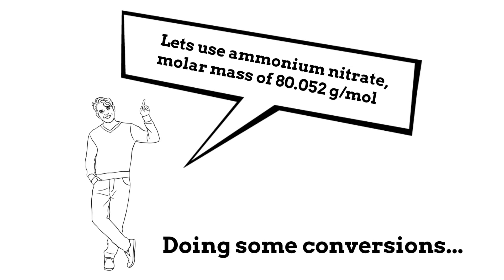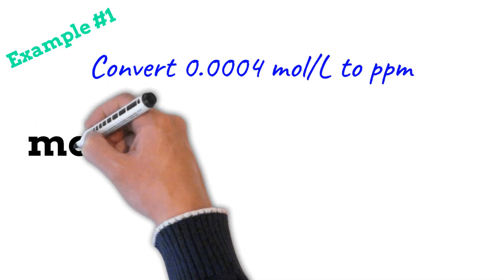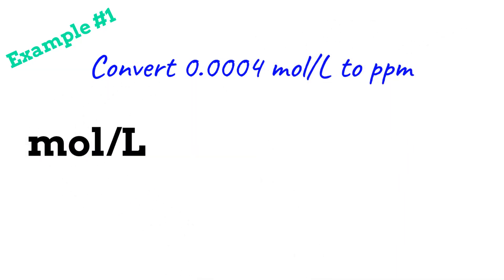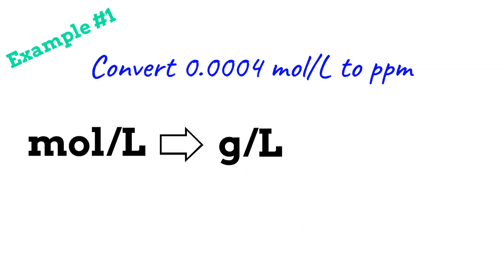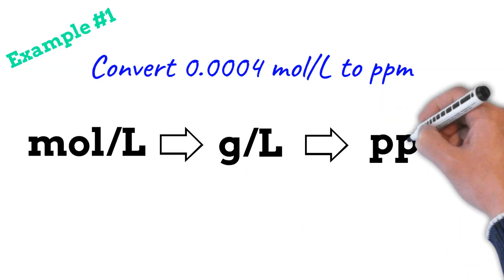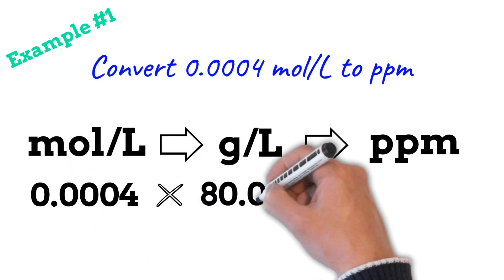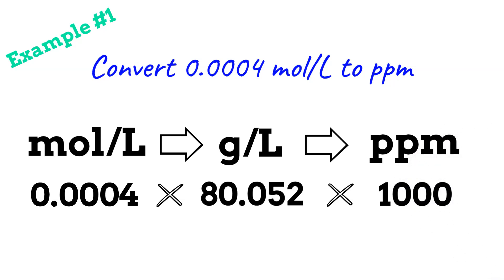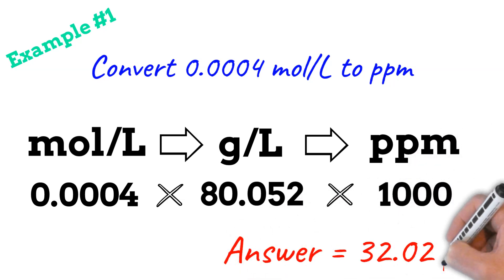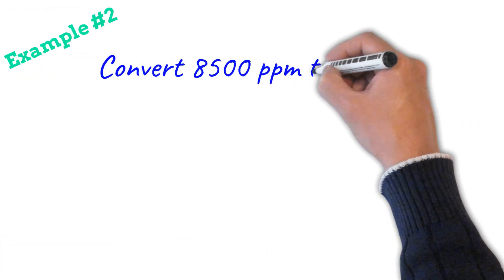Let's do some conversions using ammonium nitrate, with a molar mass of 80.052 grams per mole. The first one is to convert 0.004 moles per liter to parts per million. Take the moles per liter, convert that firstly to grams per liter, and then convert to parts per million. Take your value, multiply it by your molar mass, multiply it by 1,000, and that gives you 32.02 parts per million.